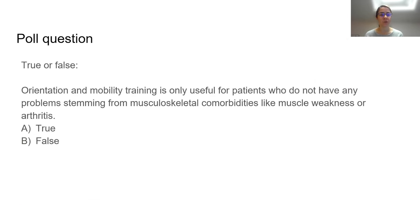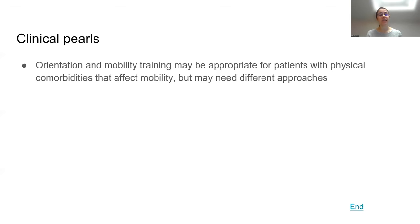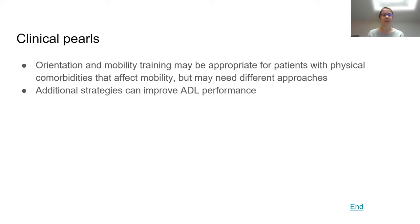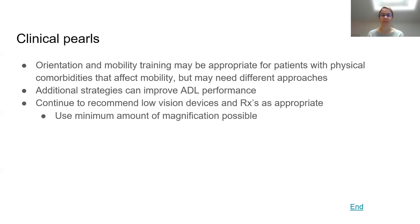A poll question asked: true or false, is orientation and mobility training only useful for patients who do not have any problems stemming from musculoskeletal comorbidities like muscular weakness or arthritis? Most respondents agreed that orientation and mobility can be helpful even in people with musculoskeletal issues that prevent use of a standard long white cane. From this patient we've seen that O&M training can be appropriate in patients with physical comorbidities, but different approaches might be necessary. It's also important to continue recommending low vision devices and glasses using the minimum amount of magnification possible.